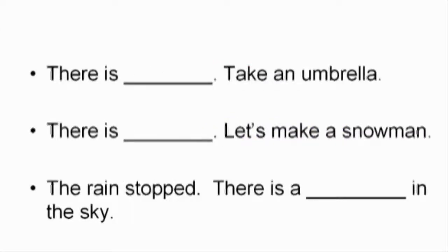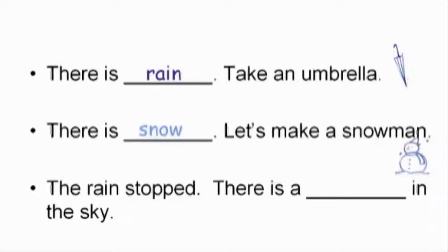另外我們也可以說現在有什麼樣的現象，例如外頭有雨，這時候我們就可以說：'There is rain, take an umbrella.' 如果可以堆雪人的話，天氣的狀況應該是：'There is snow, let's make a snowman.' 最後一句話說雨停了，天空會出現什麼呢？'The rain stopped, there is a rainbow in the sky.'